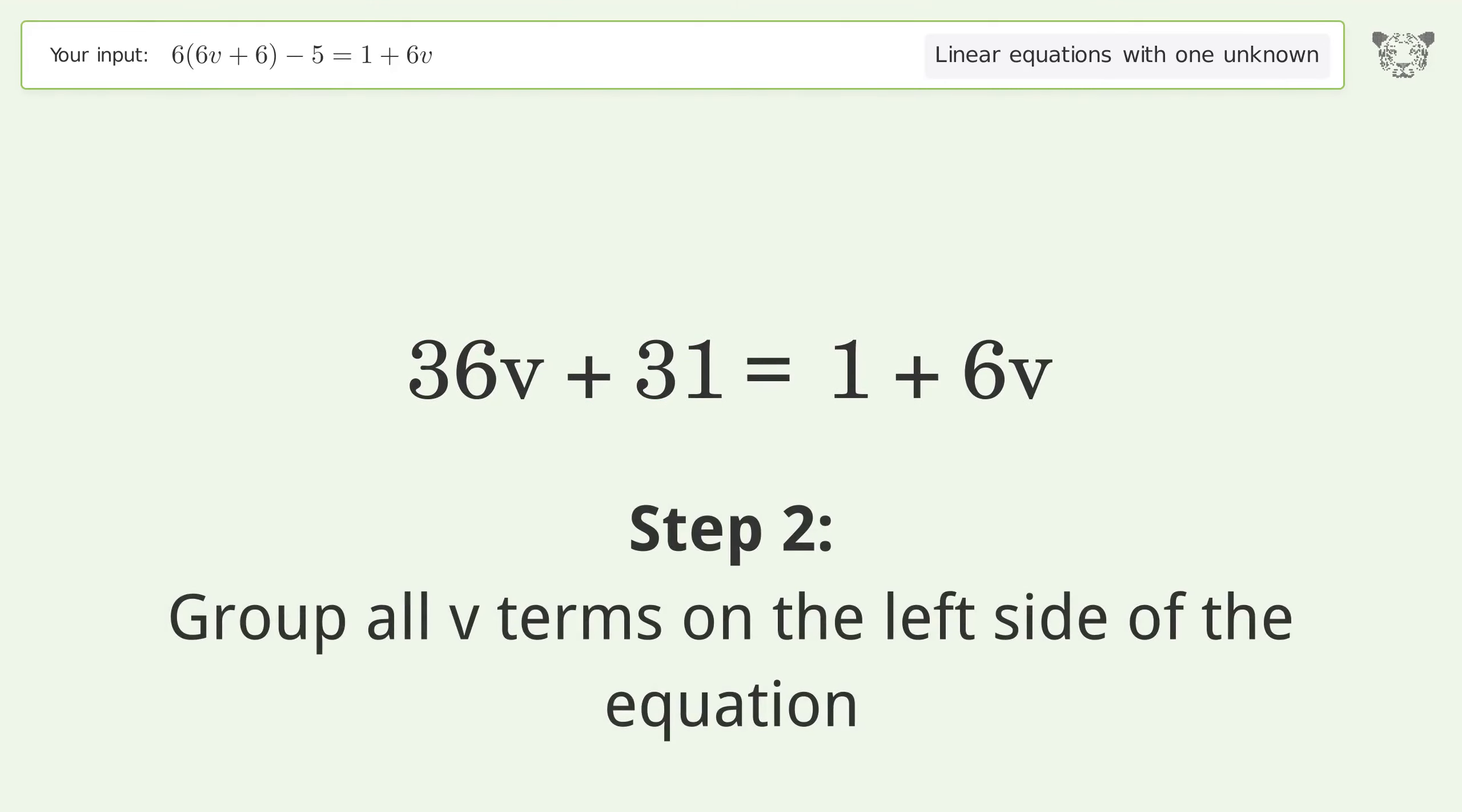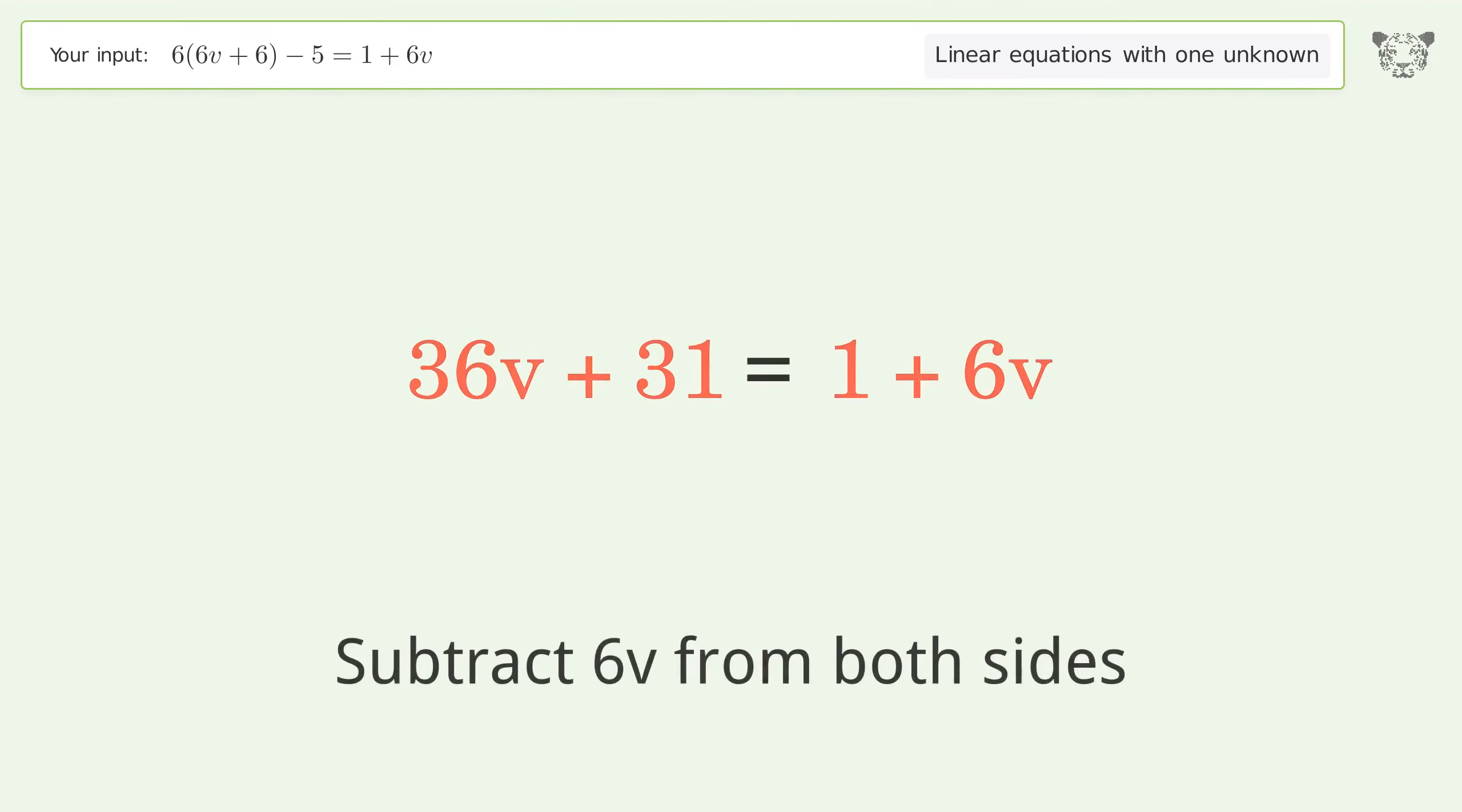Group all v terms on the left side of the equation. Subtract 6v from both sides.